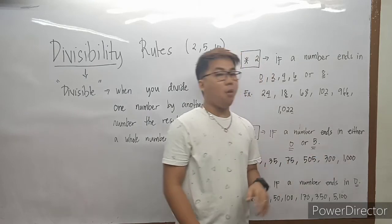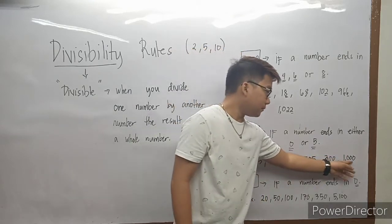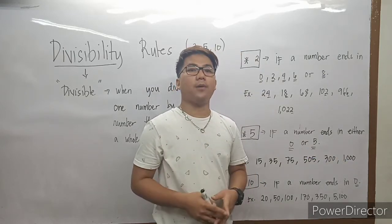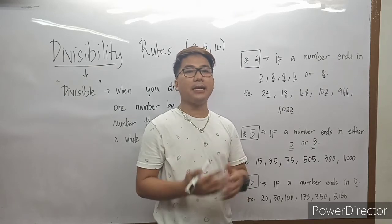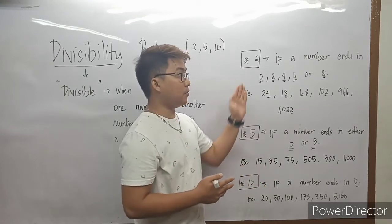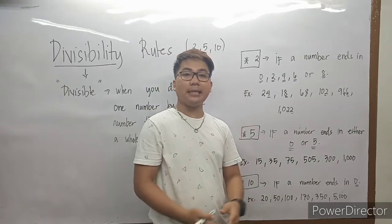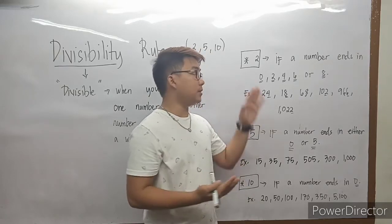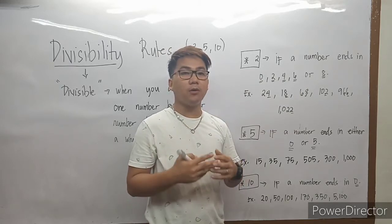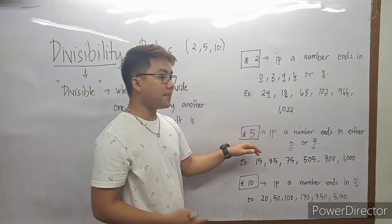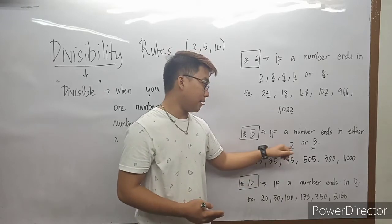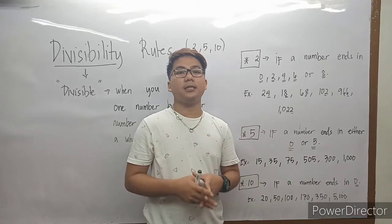And last one, we have 1,000. Ano yung last digit? Zero. So, automatic divisible by 5. Alam na natin kung paano nga ba natin malalaman kung divisible by 2 at by 5. Kapag 2: kapag ang number ay nagtatapos sa even number — 0, 2, 4, 6, 8 — automatic divisible by 2. And yung kay 5 naman: para malaman natin kung divisible by 5, kapag ang number nagtatapos sa 0 or 5, automatic divisible by 5.